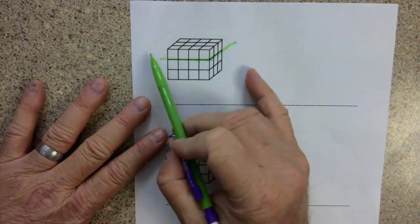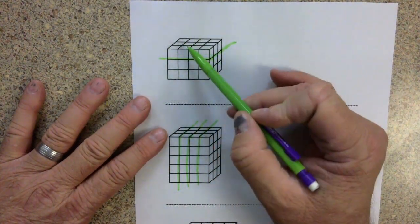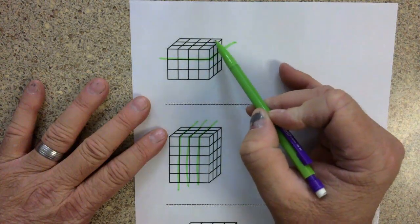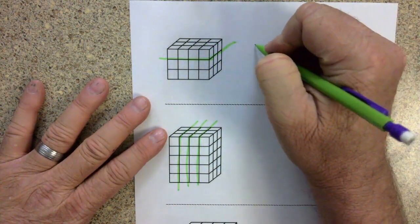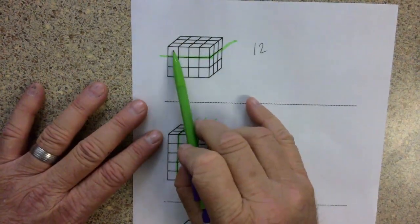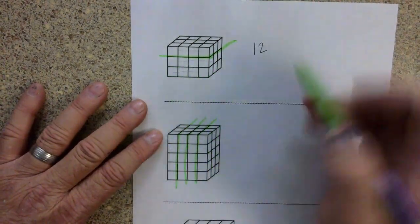Looking at this first one, I already marked, I can see that there are 1, 2, 3, 4, 5, 6, 7, 8, 9, 10, 11, 12 unit cubes in one layer. And I can see that there are 1, 2, 3 layers.